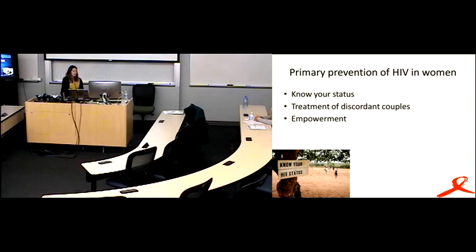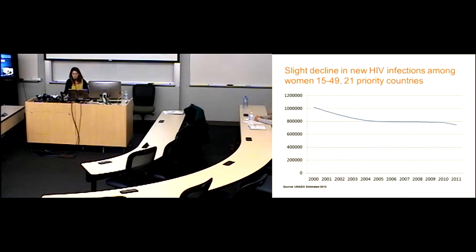So, primary prevention of HIV in women, it starts with knowing your status, so getting tested. And there has been huge pushes in low- and middle-income countries to roll out lots of testing, and a lot more people know their HIV status. Treatment of discordant couples is actually a really important part of this. We know from recent studies that reduction in transmission to a negative partner can happen if that partner is on HAART, about 90% reduction. So, WHO now recommends treating all of the positive people in a discordant relationship. And then, empowerment of women so that they're not engaged in high-risk behavior, and that they have the ability to decide when they want to have sex and to do it safely.